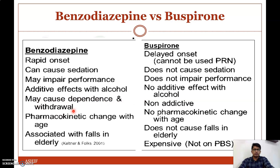Benzodiazepines may cause dependence and withdrawal; buspirone does not produce addictive effects. Pharmacokinetics of benzodiazepines may change with age, whereas buspirone shows no pharmacokinetic change with age. Benzodiazepines are associated with falls in the elderly; buspirone does not cause falls in the elderly. Benzodiazepines are also more expensive.